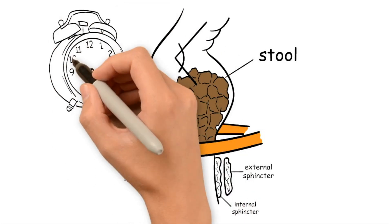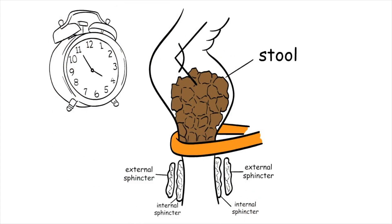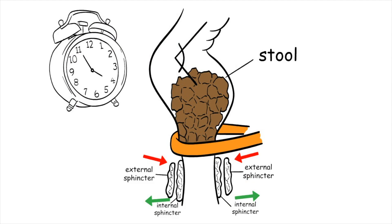At the same time, this triggers the recto-anal inhibitory reflex. This causes relaxation of the first of two valves that control release of stool. The internal anal sphincter relaxes, preparing us to pass stool. The external anal sphincter remains closed to prevent soiling.